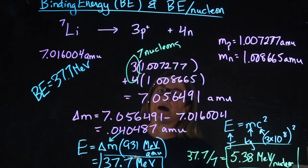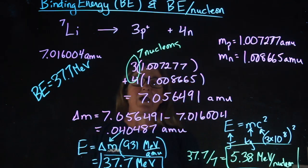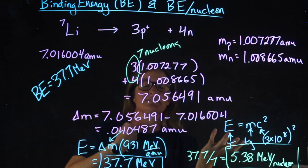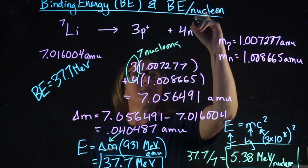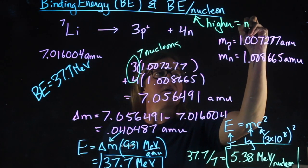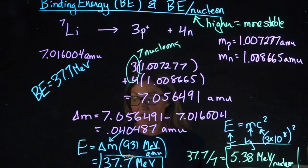But if we convert it to binding energy per nucleon, like I did here, it's a way of relating the stability of one nucleus to another. A higher BE per nucleon means that an atom is more stable.